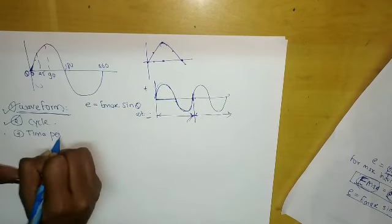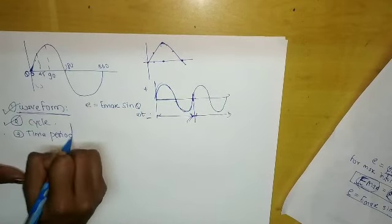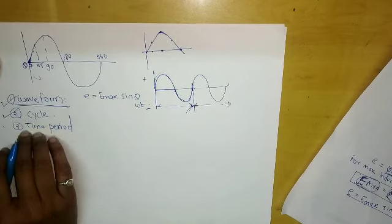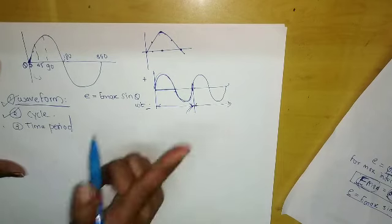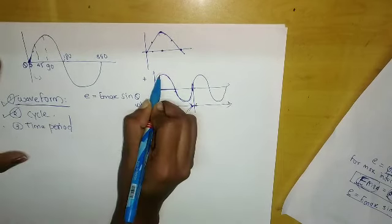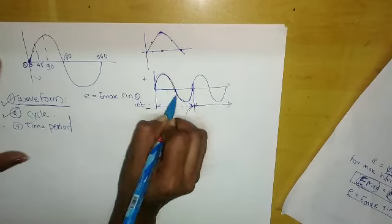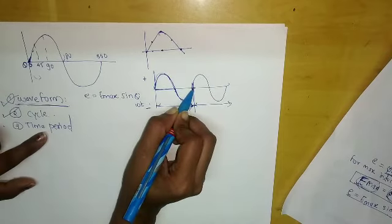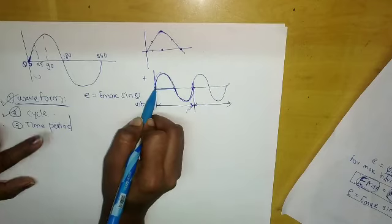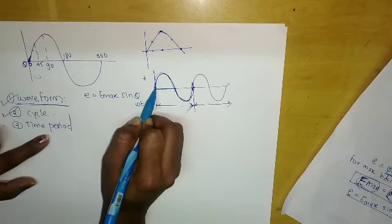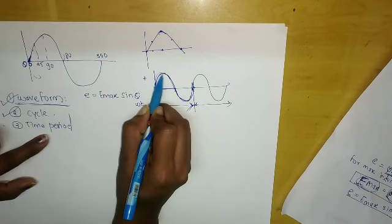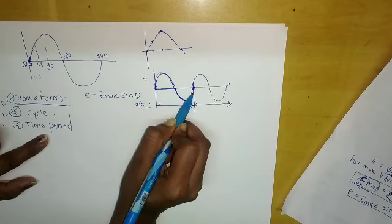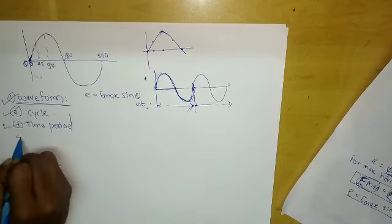Time period is the time taken by the AC quantity to complete one cycle. It is denoted by T.